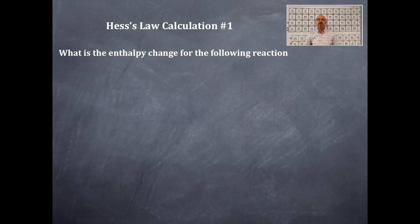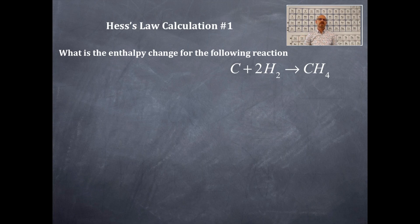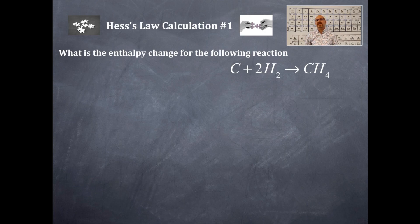What is the enthalpy change for the following reaction? Here's the reaction: I've got carbon on the reactant side and two hydrogens on the reactant side. On the product side I have methane, which is CH₄. Remember the puzzle pieces — we're going to put them together. You need to review the hints of Hess's Law Calculations from the previous lesson.